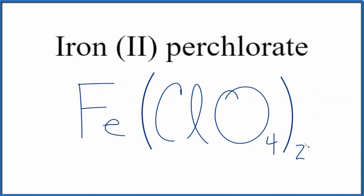If you were given the formula and asked to write the name, you know the perchlorate ion is 1- and you have 2 of them. So the iron has to be 2+, giving us iron (II) perchlorate. This is Dr. B. Thanks for watching.